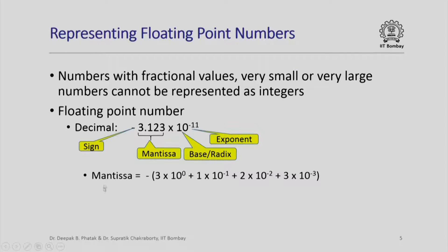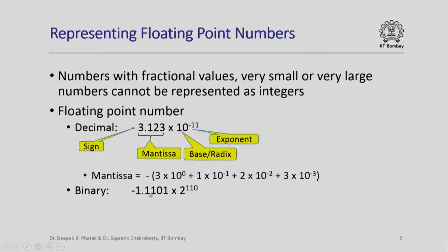In this decimal representation, the mantissa 3.123 means 3 times 10 raised to 0, plus 1 times 10 raised to –1, plus 2 times 10 raised to –2, plus 3 times 10 raised to –3, with a minus sign applied. Similarly, I could write a number in binary where the mantissa is represented in binary with a radix point, the base would be 2, and the exponent would also be a binary number.